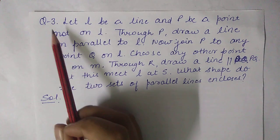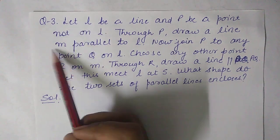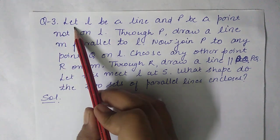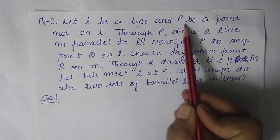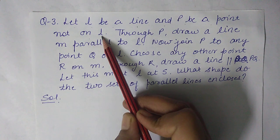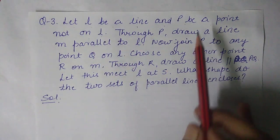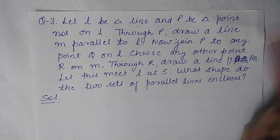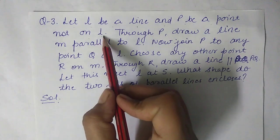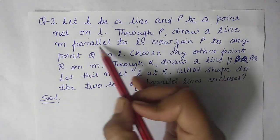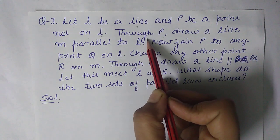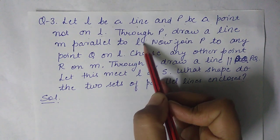Now come to question number three, which is a little bit lengthy. Let L be a line and P be a point not on L. Through P draw a line M parallel to L. We will do the construction step by step.